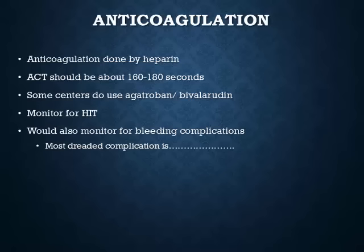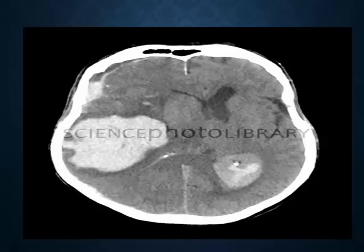For anticoagulation, heparin is primarily used. The ACT should be measured by point-of-care testing about three times per shift, with a target of 160–180 seconds. Some centers use argatroban or bivalirudin to avoid HIT concerns. Always watch for HIT just as you would in any ICU patient — assess pretest probability, score it, and proceed to testing. While waiting for platelet factor 4 results, switch the patient to argatroban rather than leaving them on heparin. Always monitor for bleeding complications.